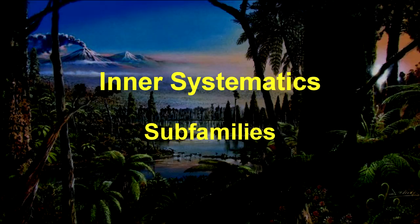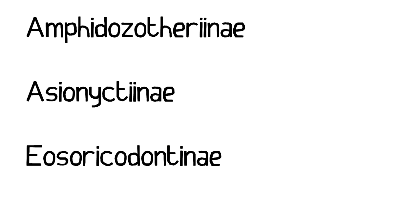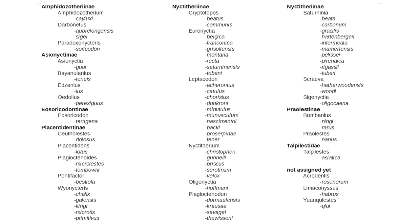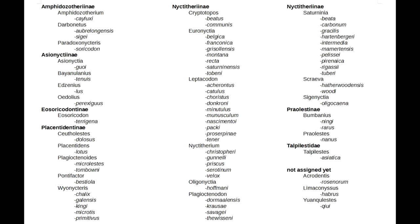Looking at the inner systematics, there are several subfamilies: Amphidozotherinae, Asionyctinae, Eosoricodontinae, Nyctytherinae, Placentidentinae, Praolestinae, and Talpilestinae. Most of them include several genera, so all in all, a lot of different Nyctytheriidae species have been described. Inner systematics might not be everyone's favorite subject, so the information is provided here for you to pause and review in detail — it's really fascinating how many species are described already.